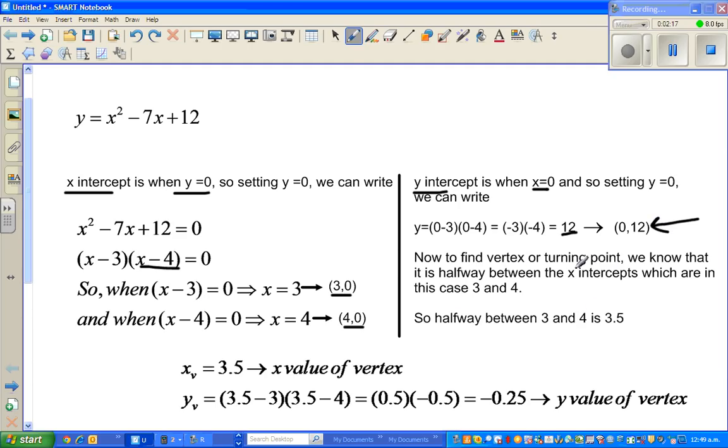Now the vertex or turning point or minimum on the graphic calculator is always halfway between the x-intercepts. We know in this case the x-intercepts are 3 and 4. So to find halfway between 3 and 4, I added them up. 3 plus 4 is 7 divided by 2 is 3.5.